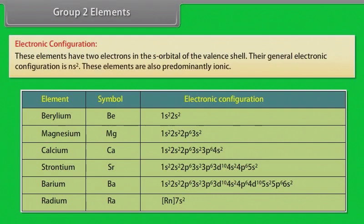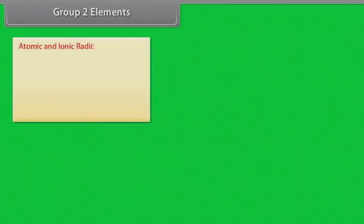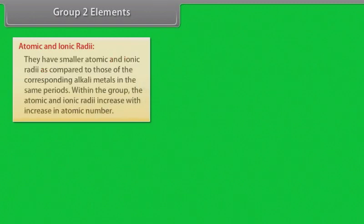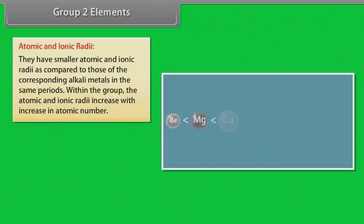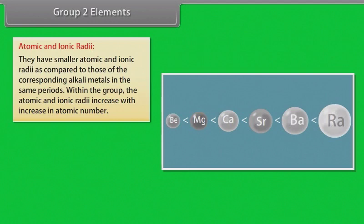These elements have two electrons in the S orbital of the valence shell. Their general electronic configuration is NS2. These elements are also predominantly ionic. Atomic and ionic radii: They have smaller atomic and ionic radii as compared to those of the corresponding alkali metals in the same periods. Within the group, the atomic and ionic radii increase with increase in atomic number.